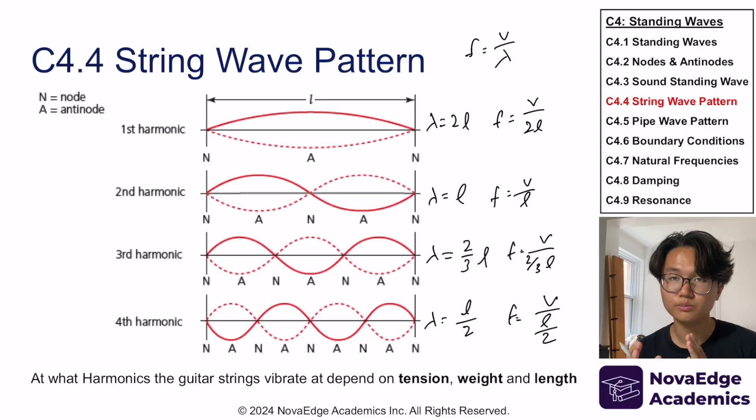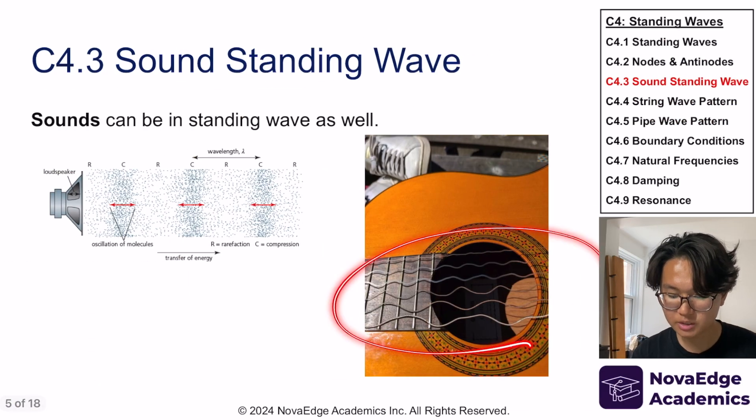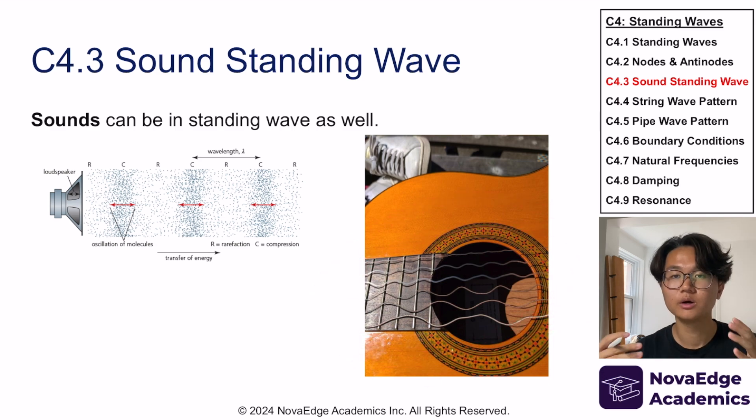As I said, do not memorize these. Now, one thing to note is at what harmonics the guitar strings or any strings vibrate at depend on tension, weight, and length. Now, this is not something you need to know in terms of mathematical calculation, but it's good to know that these guitar strings, there is some math behind it. There is something that governs it. So the tighter the tension, the faster the frequency.